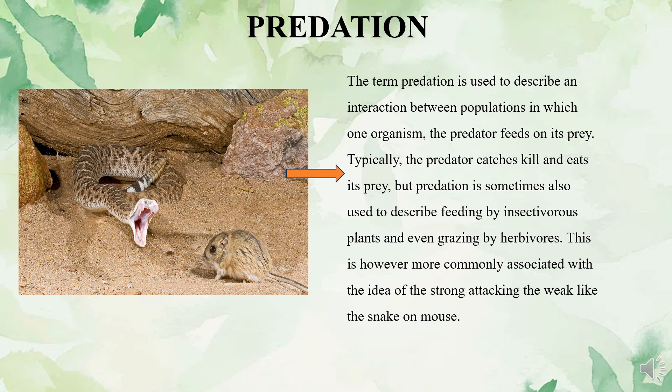The term predation is more commonly associated with the idea of the strong attacking the weak — like the tiger pouncing on the deer, the hawk on the sparrow, the frog on insects, and the snake on mouse. In natural communities, predation is a step in the transfer of energy. It is a negative interaction which results in negative effects on the growth and survival of one of the two species populations.